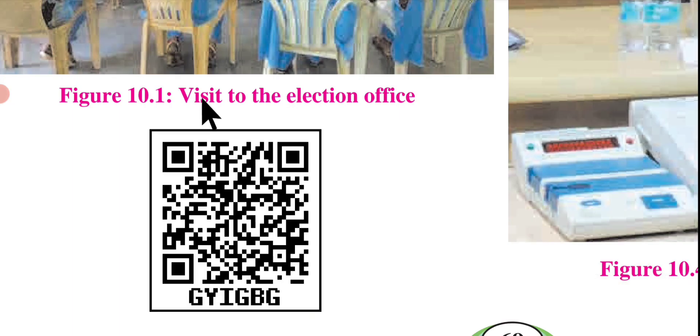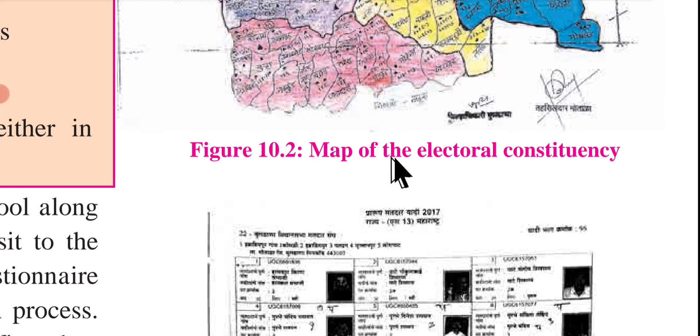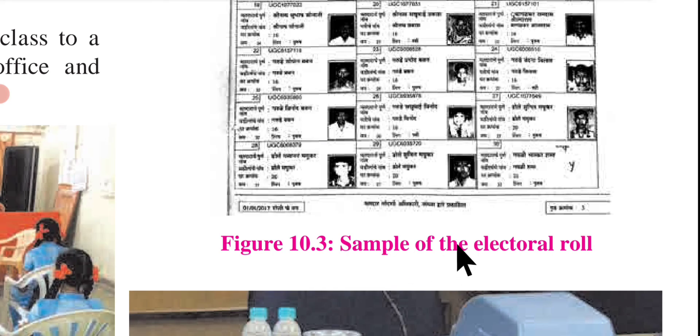Visit to the election office. Map of the electoral constituencies. Map of the electoral roll. Electronic voting machine.